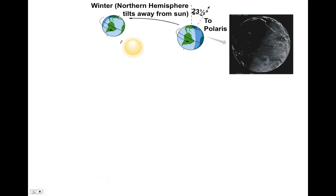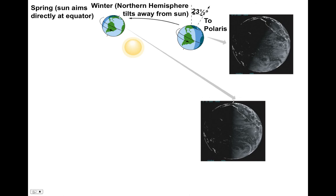In spring, neither the northern nor southern hemisphere is tilted toward the sun — both receive equal amounts of solar radiation. This is the transition from winter to summer. The southern hemisphere begins to cool as it receives less energy than it did during our winter, while the northern hemisphere begins to warm as it receives more energy.